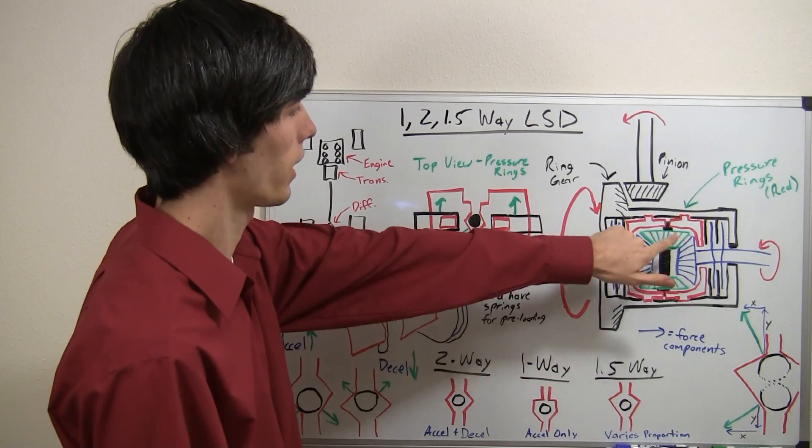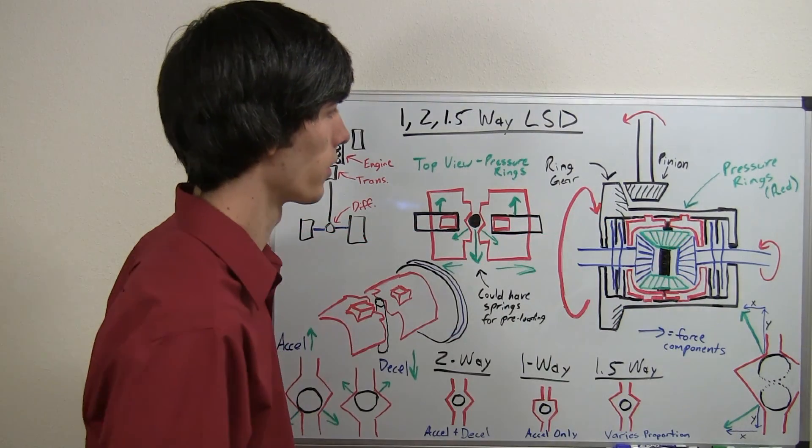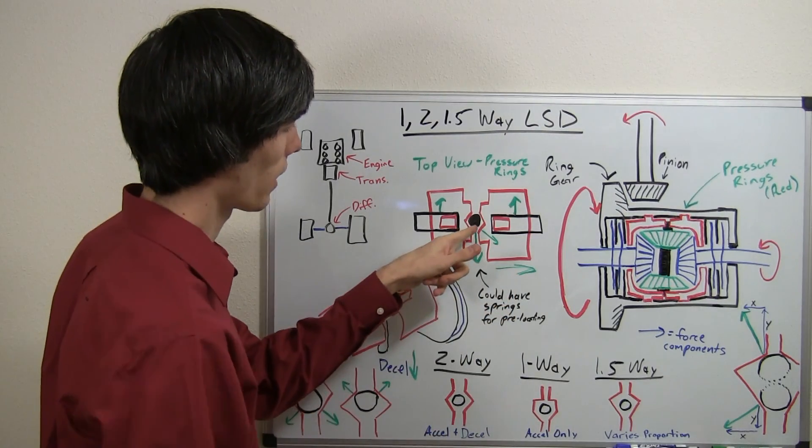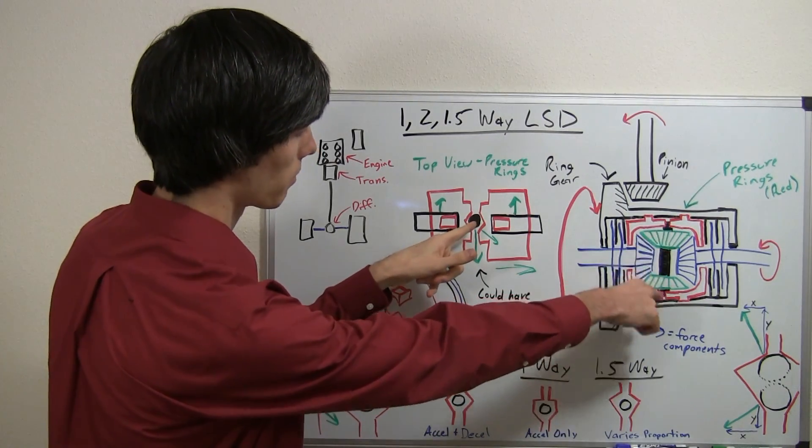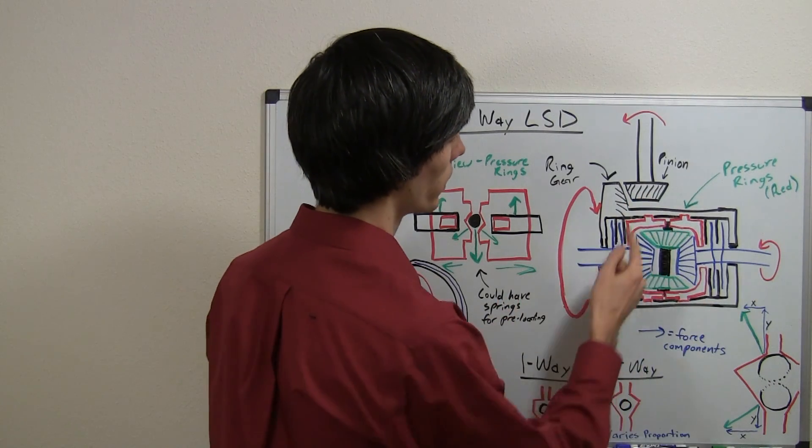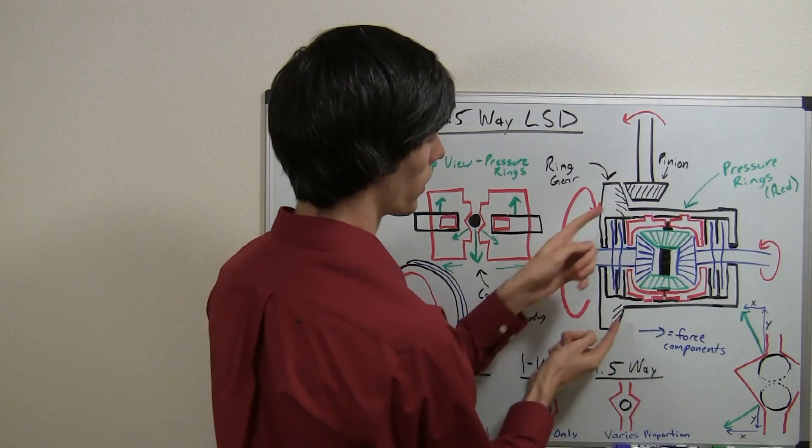So, the big deal, all it has to do with is these pressure rings. What happens is you've got this black pinion shaft, and so when you accelerate this differential housing, so this pinion rotates this direction, and it rotates the differential housing.